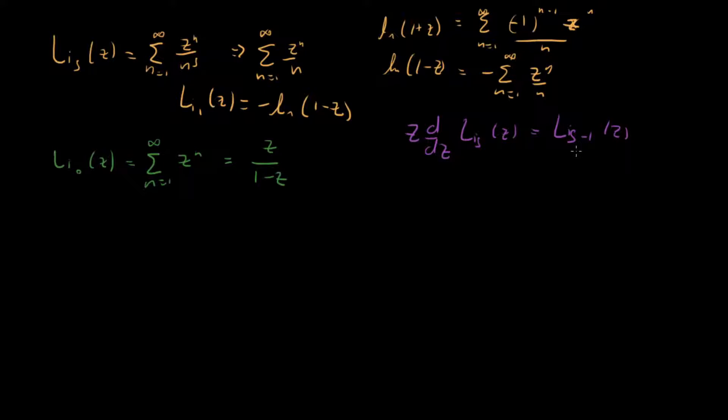So this shifts us down by 1. And we can kind of check that here. So if we start with Li sub 1 right here, you can see that if you take a derivative of this guy, multiply it by z, you get this guy right here. So we know that this property works.